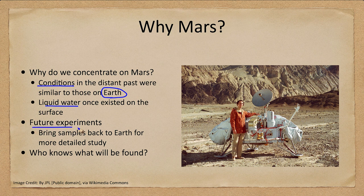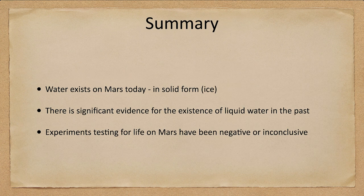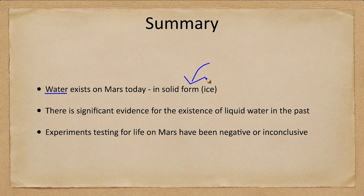Future experiments are planned to bring samples back to Earth for more detailed study, and who knows what might be found. To summarize: we do have water on Mars today in solid form — ice. There is significant evidence that liquid water also existed in the past, so we know that water has been present on Mars.